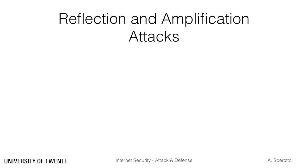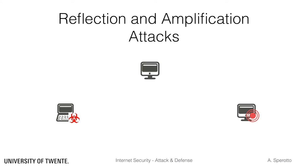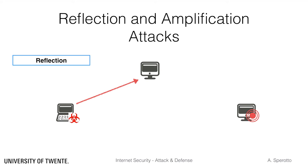We have mentioned before that some DDoS attacks can be indirect. Let's now talk about a specific class of indirect attacks, namely reflection and amplification attacks. A reflection and amplification attack involves one or several attackers, a target, and a reflector, which typically is a service that is misused for the attack. A typical example is an open DNS resolver. The attacker sends crafted requests to the reflector using the source address of the target — we call those spoofed requests.